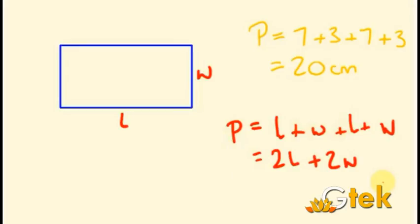Now I am going to assign values: L equals 7 and W equals 3. So 2 times L is 14 and 2 times W is 6, giving a total of 20. This is the second way of identifying the perimeter of the rectangle using expressions, and this second model is used in algebraic expressions.